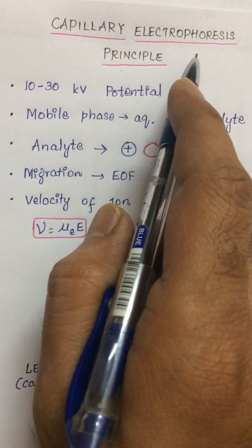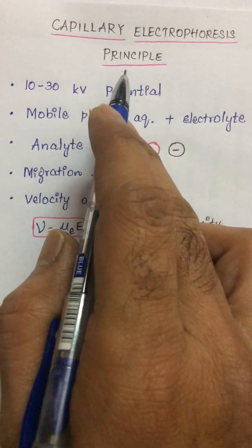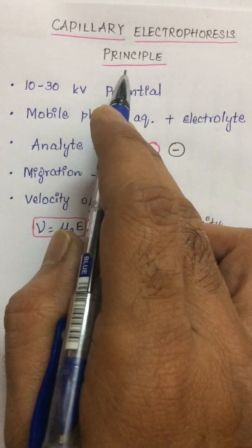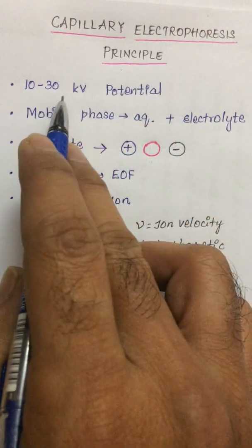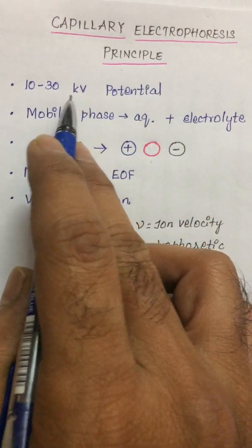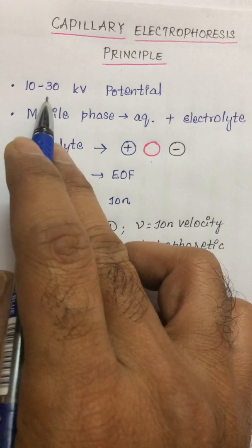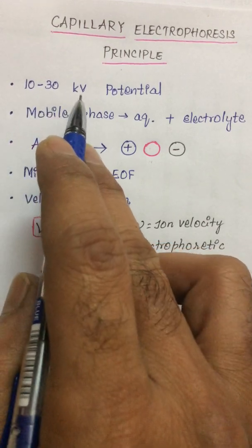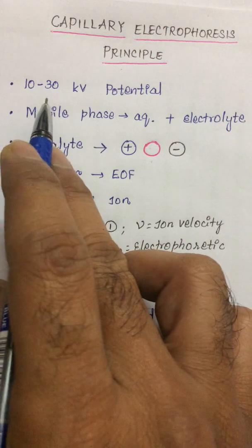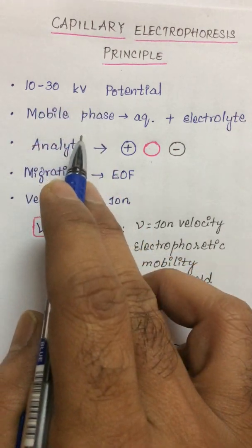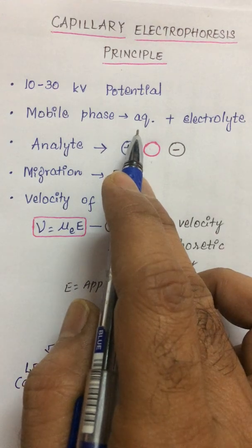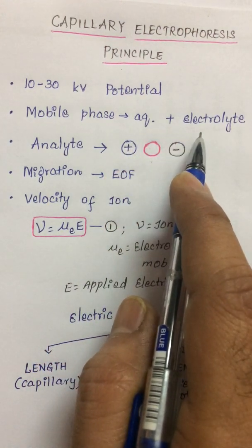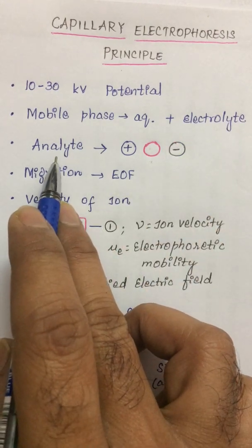Capillary electrophoresis: introduction and instrumentation. As seen in the last video, separation of charged particles is carried out by applying a high voltage of about 10 to 30 kilovolts to a very narrow fused silica capillary filled with a mobile phase. The mobile phase generally contains an aqueous component and an electrolyte, which is a buffer taken in a reservoir.